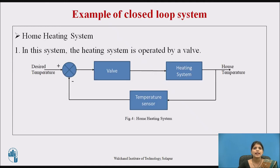We will discuss an example of the closed loop system: the home heating system. Here the heating system is operated by the wall thermostat, and the desired temperature is the reference input. This is compared with the feedback signal, which is the actual temperature sensed by a thermal sensor. The difference between the desired temperature and the actual temperature actuates the wall mechanism to change the temperature as per our requirement. Finally, the house temperature is the controlled output. Since the controlling action is dependent on the output, this is an example of a closed loop system.